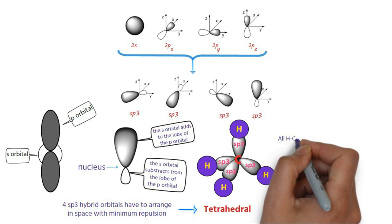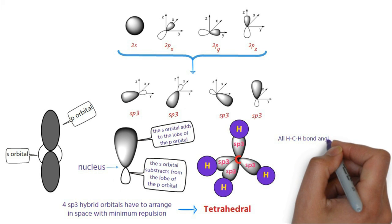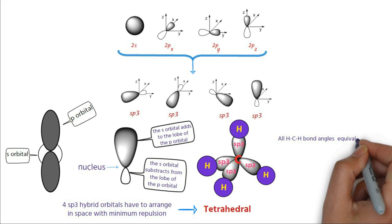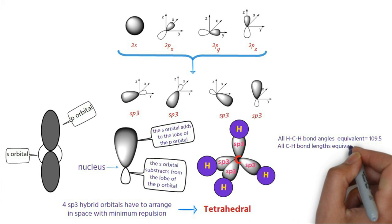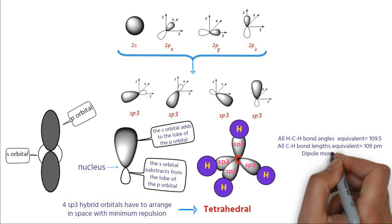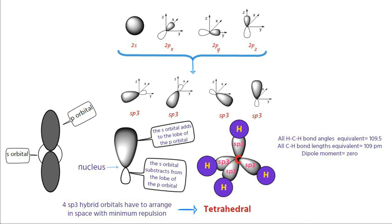In case of tetrahedral methane, all HCH bond angles are equal to 109.5 degrees. All CH bond lengths are equal to 109 pm and dipole moment is zero. This is same as found experimentally. This proves that methane is tetrahedral. Any carbon, as the one in methane, which forms four covalent bonds using sp3 orbitals is called a tetrahedral carbon.